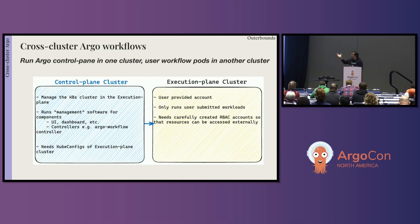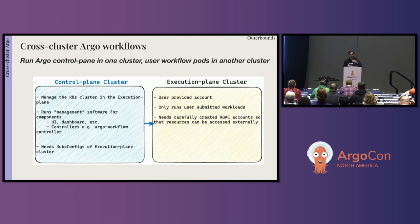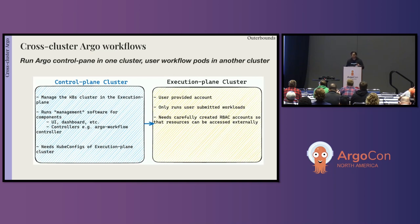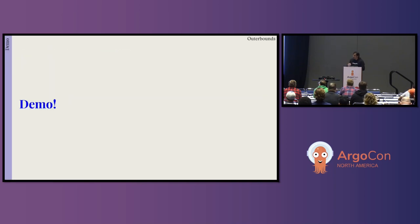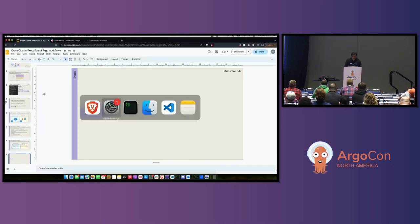To summarize: the execution plane is a user-provided cluster that runs user-submitted workloads, and it needs carefully created RBAC. You need a service account with enough privileges to watch Argo workflows, run pods, and watch pod status. That service account is used to create the kubeconfig, which is passed over to the control plane cluster so it can take effect. The creation of the service account and kubeconfig and handing it over requires some automation.